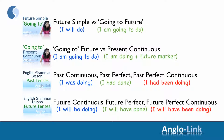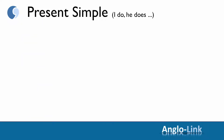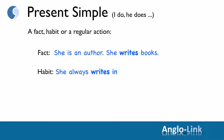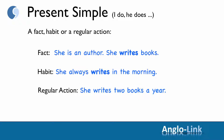Let's start our revision by looking at present simple — I do, he does, etc. As you will remember, the present simple tense indicates a fact, a habit, or a regular action. For example: a fact — she's an author. A habit — she always writes in the morning. And a regular action — she writes two books a year.